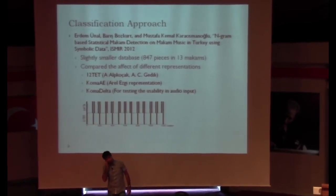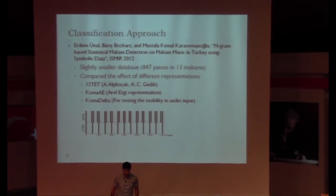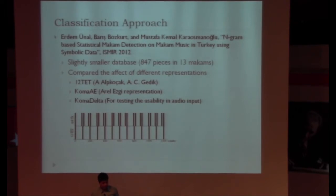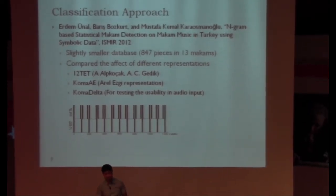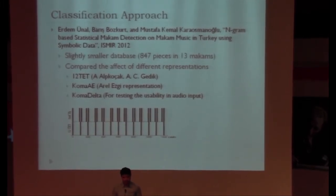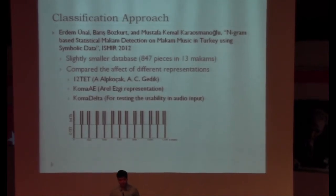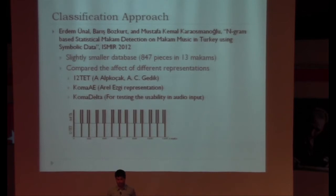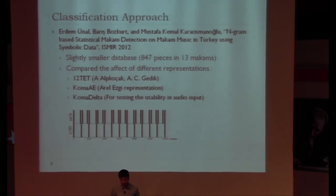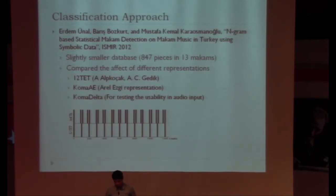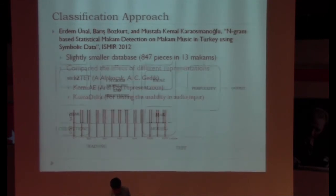Our classification approach is also being presented in Izmir this year. It's named N-gram-based statistical MACAM detection on MACAM music in Turkey using symbolic data. We used a slightly smaller database because of availability while doing our experiments. In that paper, we compared the effect of different representations. First, we implemented some earlier work by Alpkoçak, which is the 12-tet representation. Then we wanted to show the performance of using comma RLSG representation. We also need to move to the audio domain. To see if our symbolic representation algorithms can work on audio, we represent the data on the melodic progression side, which we named comma delta representation.